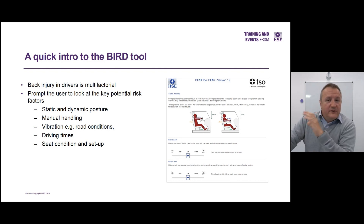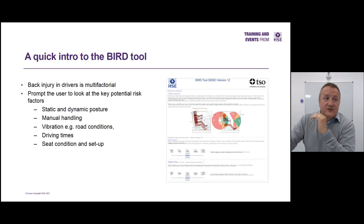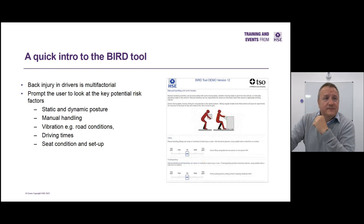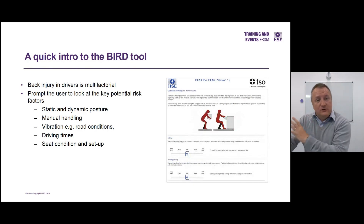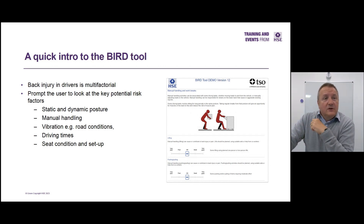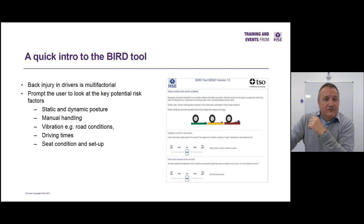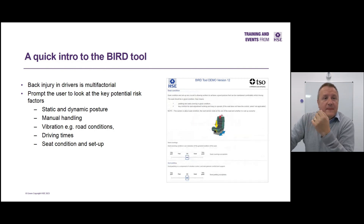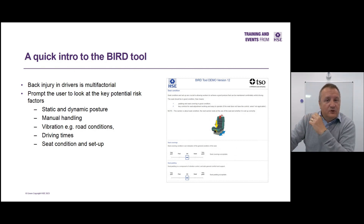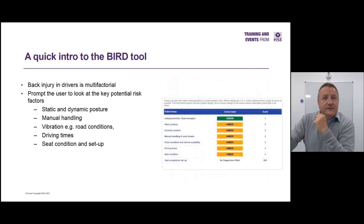Paul will go into this in more detail in a second, but very briefly, the BIRD tool looks at static and dynamic postures, looks at manual handling and tries to identify whether you need to do a manual handling assessment. It looks at the road conditions and exposure to vibration and all other sources of vibration — helicopters, for example, could obviously be a source of significant vibration — and it looks at the seat.